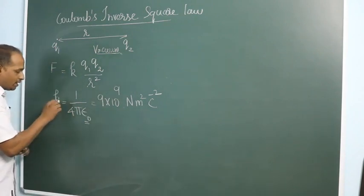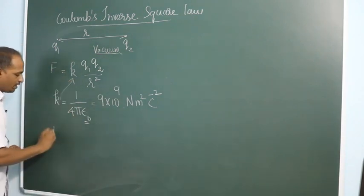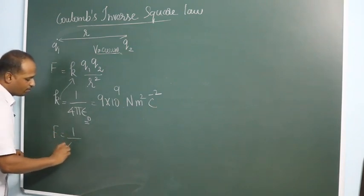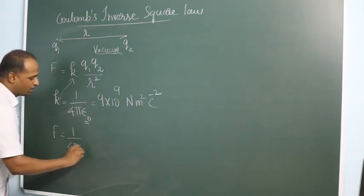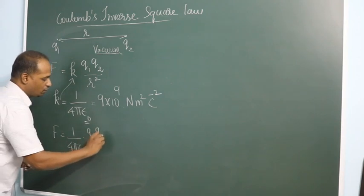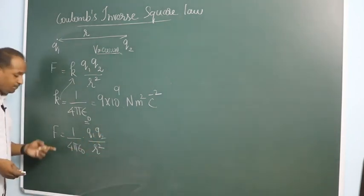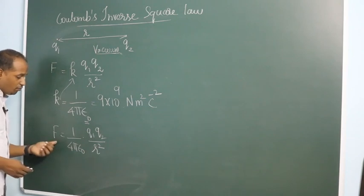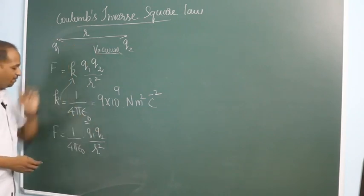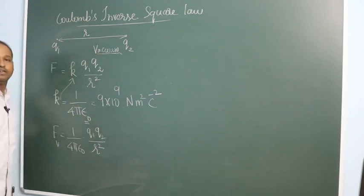But when you write K over here, you will get F is equal to 1 by 4 pi epsilon naught Q1 Q2 by R square. Here this is the force between two charges when they are kept in vacuum. Let's call this F_V.